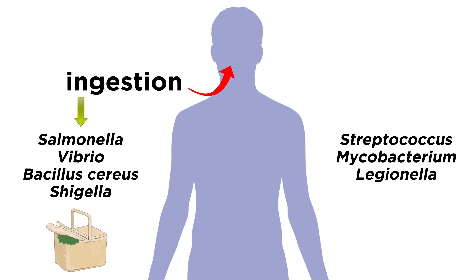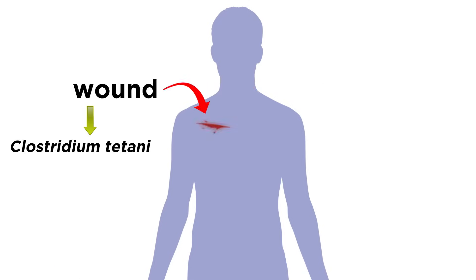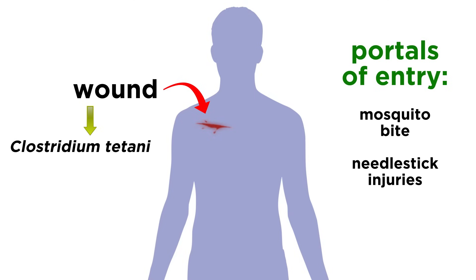Other bacteria, such as Streptococcus, Mycobacterium, or Legionella, enter through inhalation, perhaps after a sick person's sneeze, or infected aerosol particles floating through the air. Clostridium tetani, the causative agent of tetanus, enters through trauma or a wound. Other portals of entry include a mosquito bite, needle stick injuries, or sexual transmission.